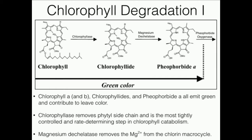Remember, a chelatase is something that inserts a transition metal or some other metal — in this case it's magnesium. A d-chelatase removes that metal, and they're usually removing it from some kind of macrocycle like this. We're going to go into a little more detail on that in the next slide.